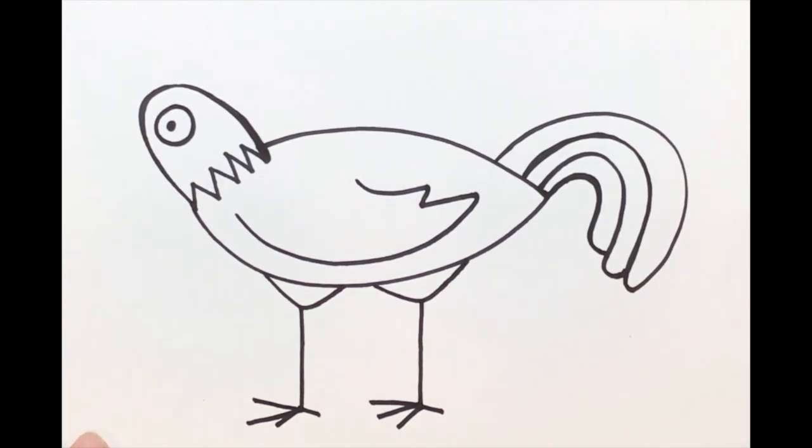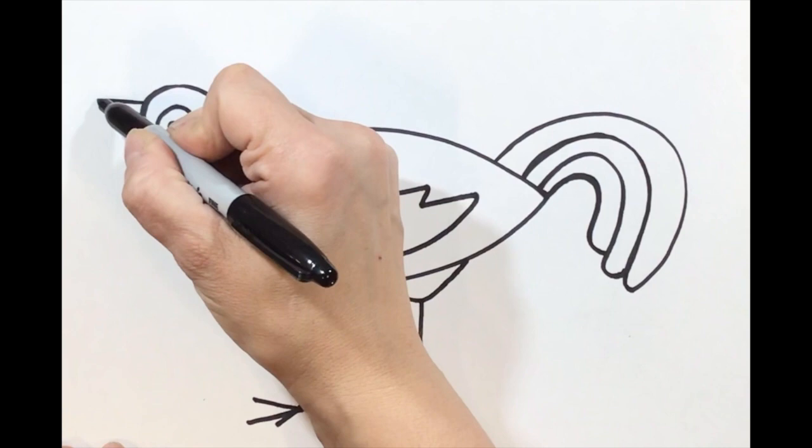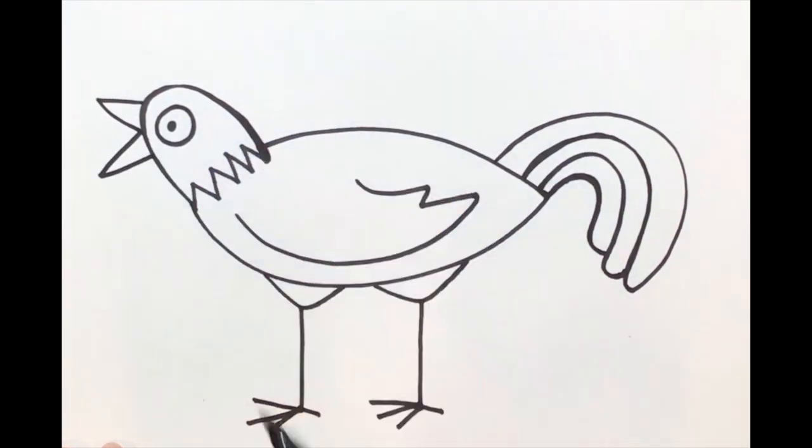Step number nine, we're going to add the rest of the details that we need. We're going to add a beak. I'm missing a beak. So let's go ahead and add our beak. And it's like we're adding two little triangles to create our beak.